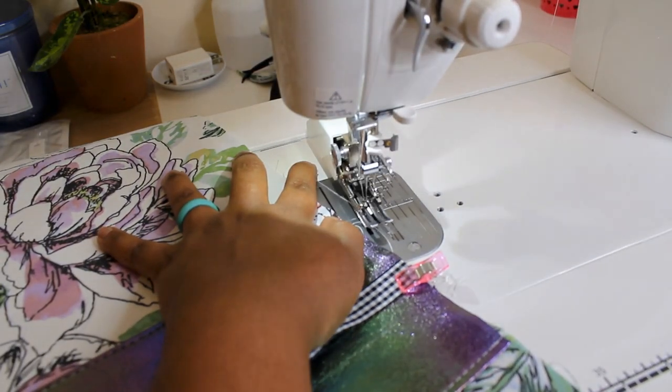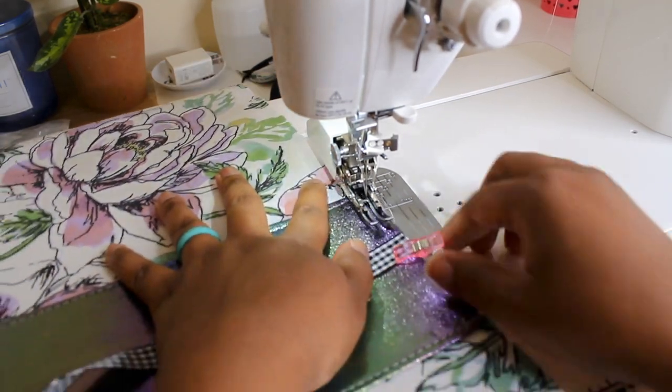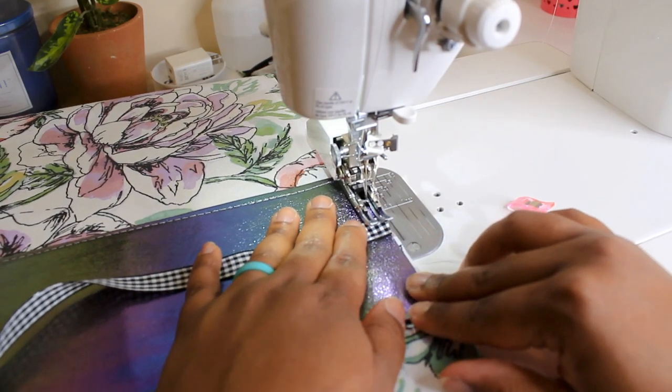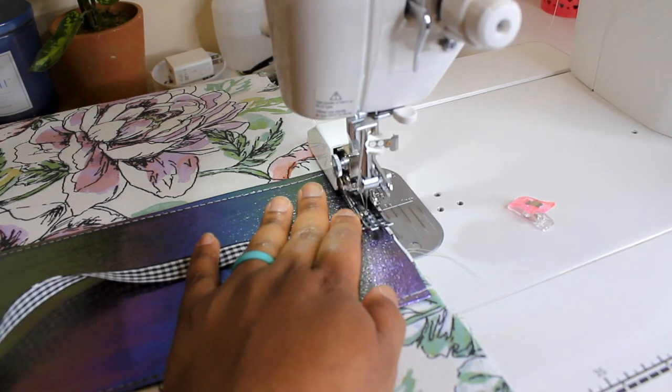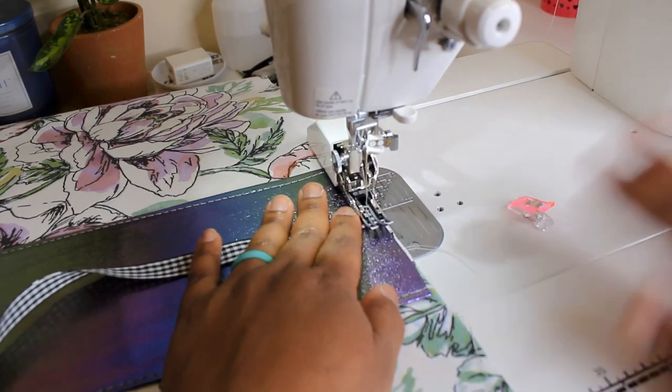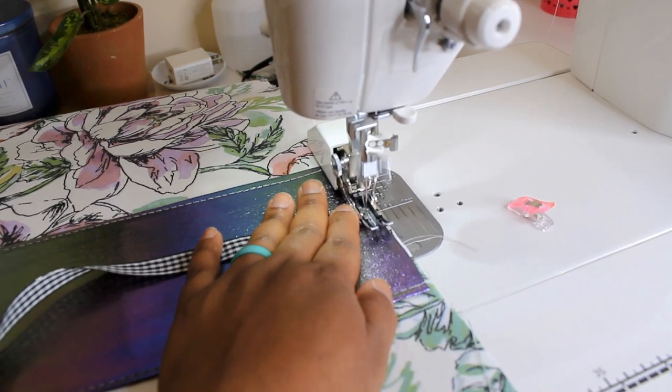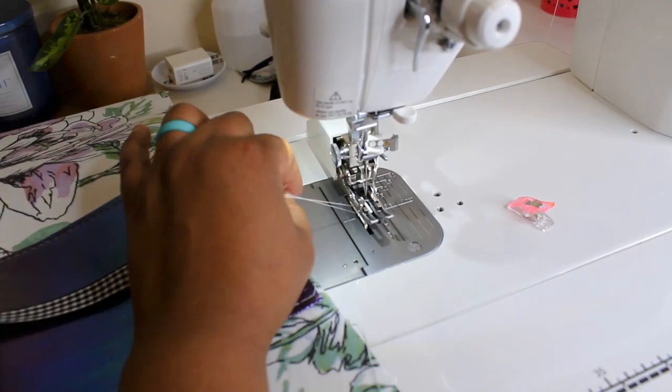Alright so now we are going to tack down our ribbon. Now I am going to say that I am one of those people that I want to make sure that things do not move so I am going to go over my ribbon quite a few times, just moving forward and then back stitching, just to make sure that it's tacked down really well as I know that I'll be pulling at this quite a bit.